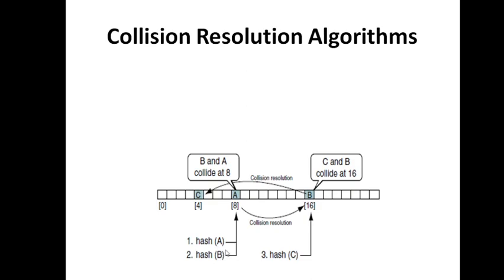When searching for B, we use the hash function, go to the produced address, and if B is there, the search is complete. But if it is not there, we cannot end the search — B may have been relocated due to collision resolution, so we must check other potential addresses. This prolongs search time. That is why hash search, though ideally O(1), does not always achieve that result in practice. We will look at more efficient collision resolution algorithms later.